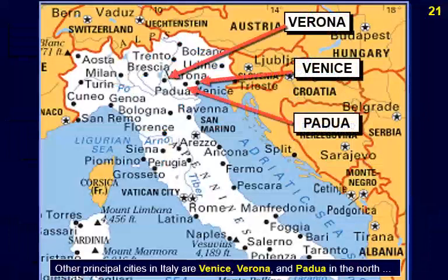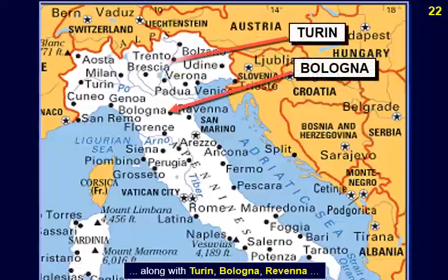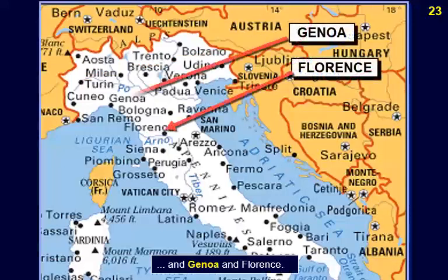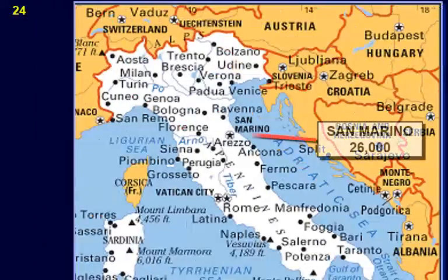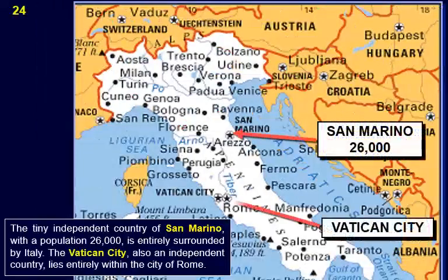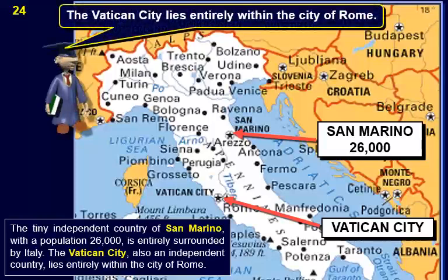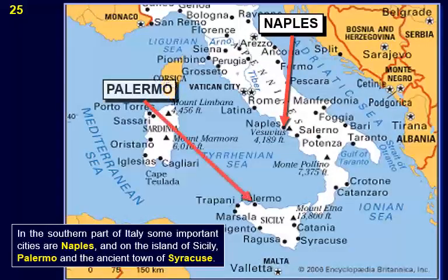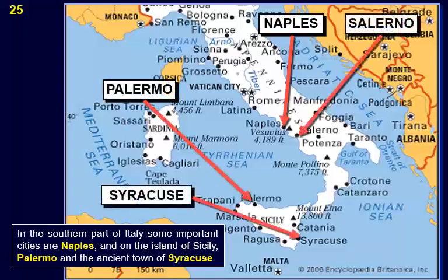Other principal cities in Italy are Venice, Verona, and Padua in the north, along with Turin, Bologna, Ravenna, Genoa, and Florence. The tiny independent country of San Marino, with a population of 26,000, is entirely surrounded by Italy. The Vatican City, also an independent country, lies entirely within the city of Rome. In the southern part of Italy, important cities are Naples, and on the island of Sicily, Palermo and the ancient town of Syracuse.